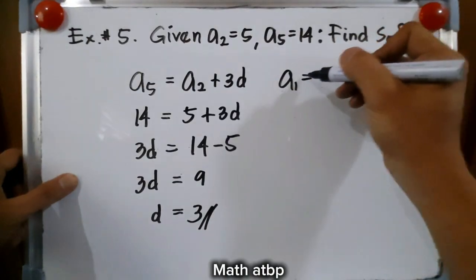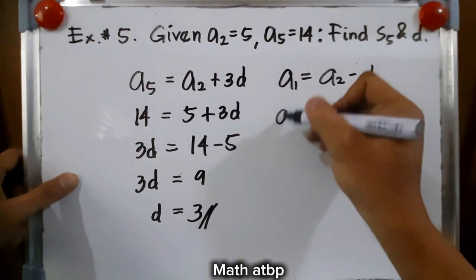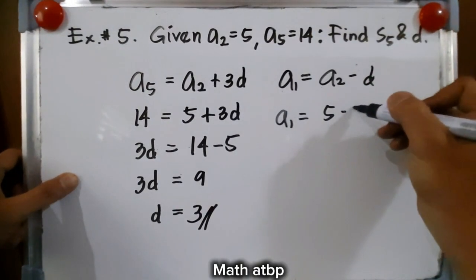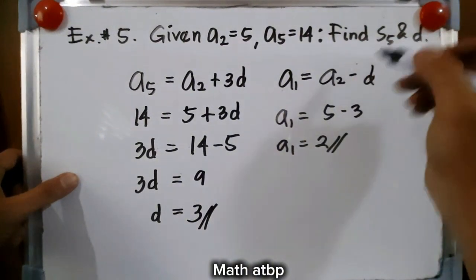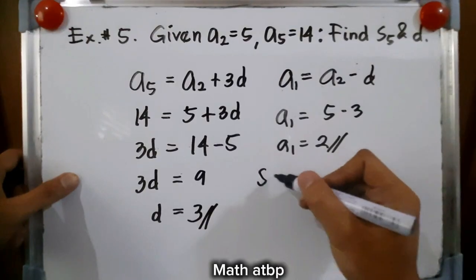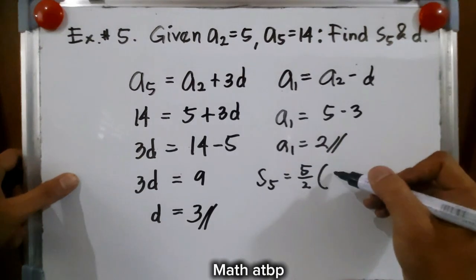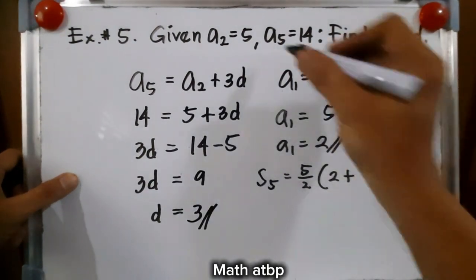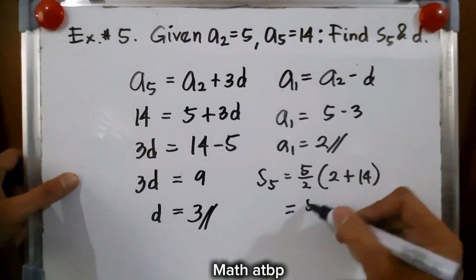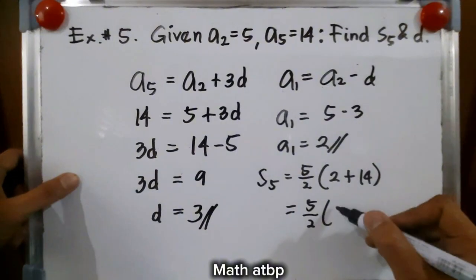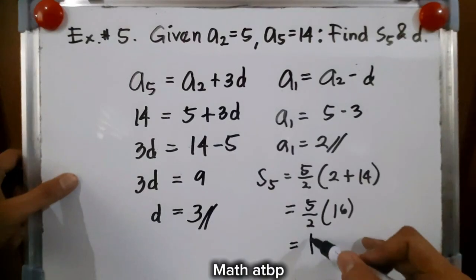Solving for a sub 1, that is equal to a sub 2 minus d. So a sub 1 is equal to 5 minus 3, and a sub 1 is equal to 2. Now let us solve for s sub 5, or the sum of 5 terms. s sub 5 is equal to 5 over 2 times a sub 1, which is 2, plus a sub 5, which is 14. So s sub 5 is equal to 5 over 2 times 16, and 16 divided by 2 is 8 times 5, giving us 40.